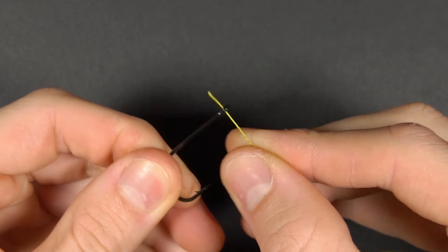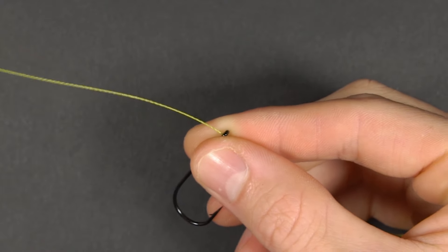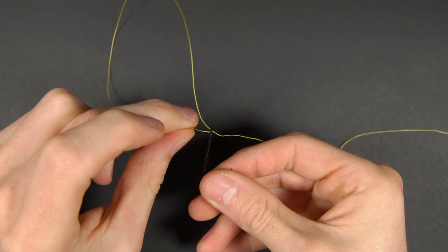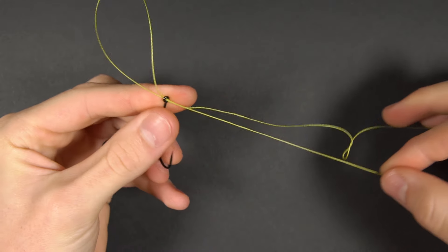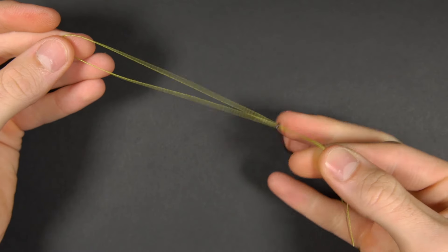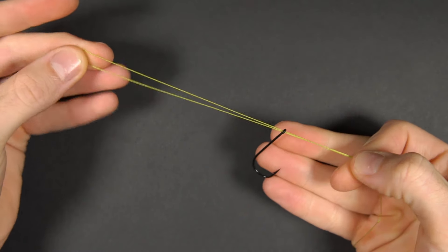Alternatively, if your hook has a very small eye and you can't pass the doubled up material through it, then pass your line through it once and then back through in the opposite direction, leaving about six inches of doubled up line outside of the hook eye.